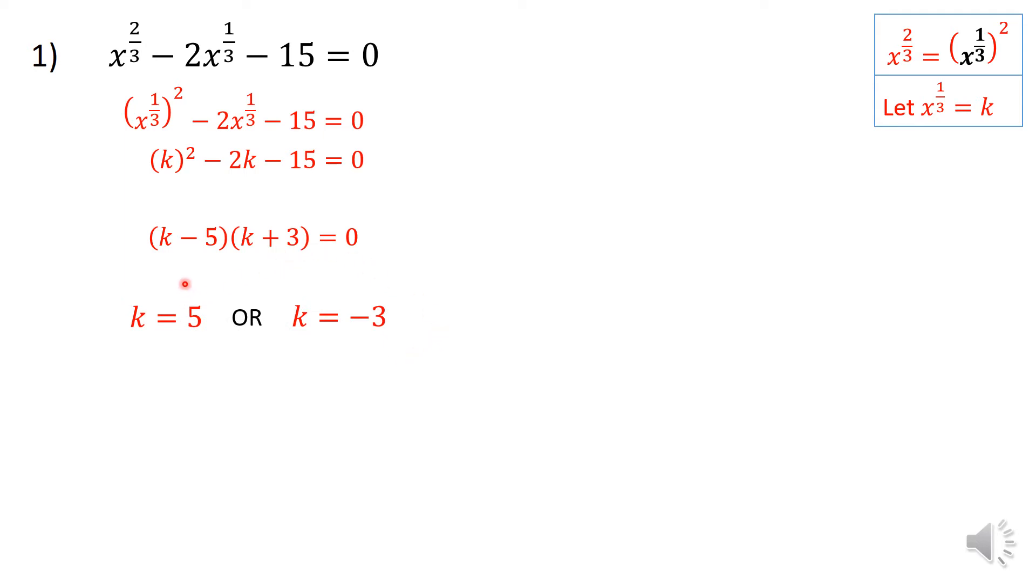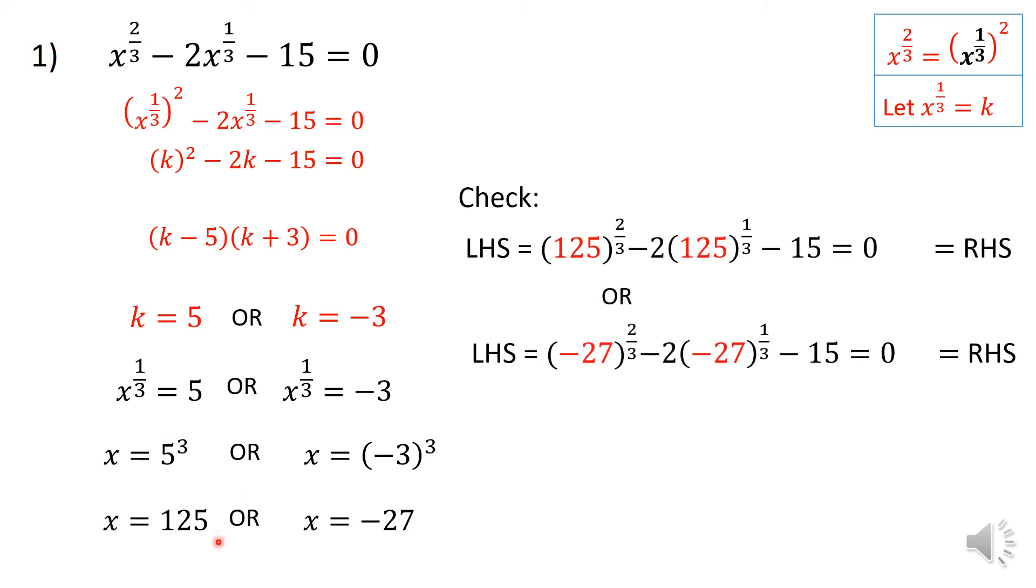Now at the end of the day, I'm going to get that it factorizes to (k - 5)(k + 3) = 0, meaning k = 5 or k = -3. However, I am not looking for the values of k. I am looking for the values of x^(1/3). Now when you're familiar with indices, if you want this base to be on its own and it's raised to the power of 1/3, you need to cube it. So you're going to cube both sides, giving you that x = 125 or x = -27.